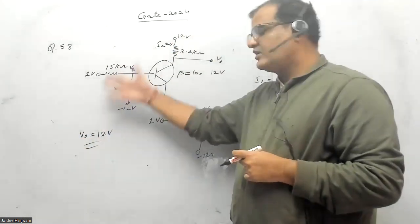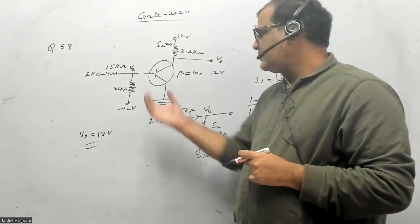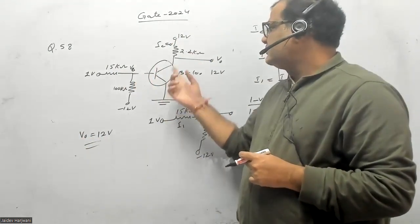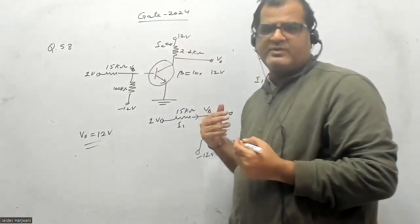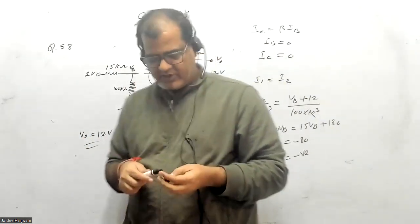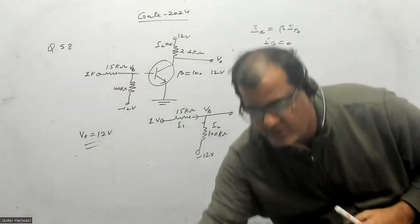The transistor is working in the cutoff region. This is an NPN transistor as given. This is also reverse biased. Both junctions are reverse biased, so this is a cutoff cutoff operation. So this is the correct answer. Thank you very much.